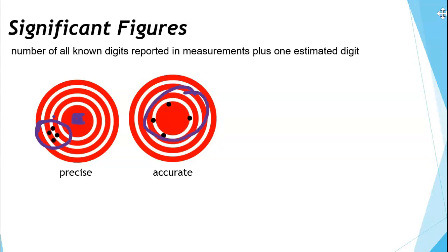Accuracy is a measure of how close the measured value is to the accepted value. So if a brick is supposed to be six inches long and you measure that it is eight inches long, that wouldn't be a very accurate measurement — it's not close to the accepted value. These dart shots here are pretty close to the center of the bullseye — they're pretty accurate — but they're far apart from one another, which makes them not very precise. So when we are looking at significant figures, we are indicating how precise something is, not necessarily how accurate, but how precise it is.